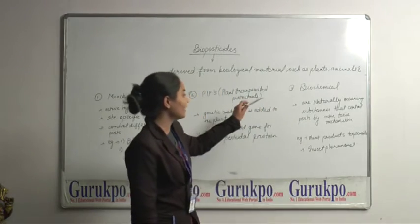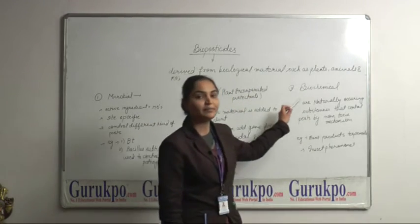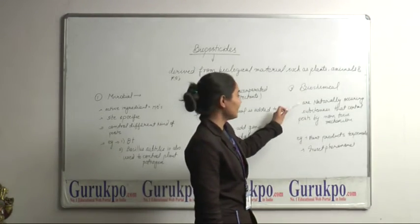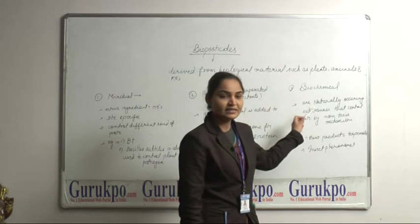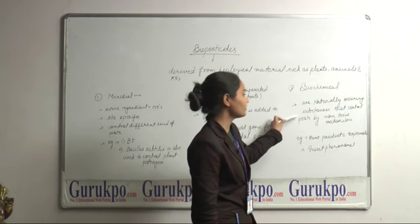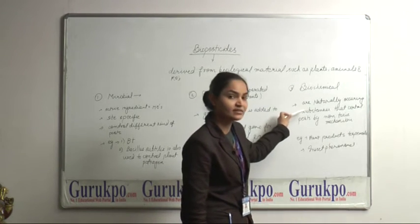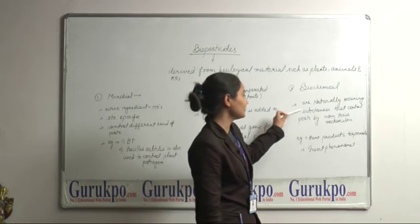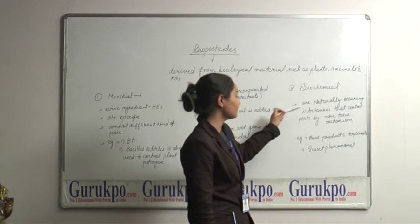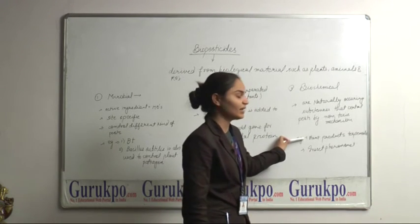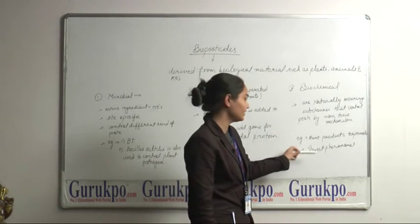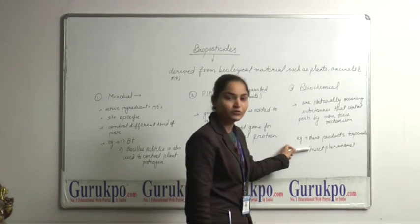The third category of biopesticide are biochemical pesticides. Biochemical pesticides are naturally occurring chemicals or substances that can control pests by a non-toxic mechanism. In this, we can include plant products like terpenoids and insect pheromones.